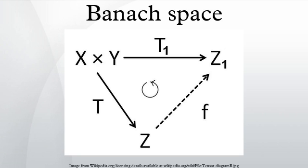This is well defined because all elements in the same class have the same image. The mapping T₁ is a linear bijection from X/ker(T) onto the range T(X), whose inverse need not be bounded.